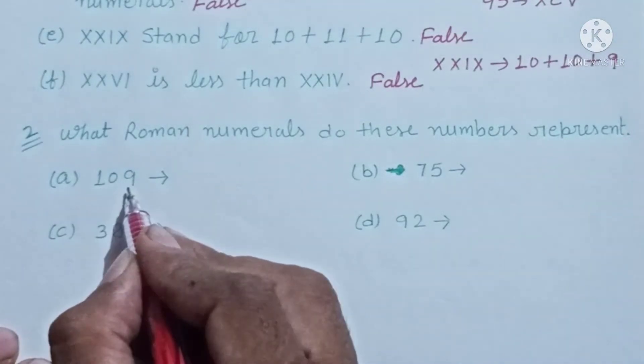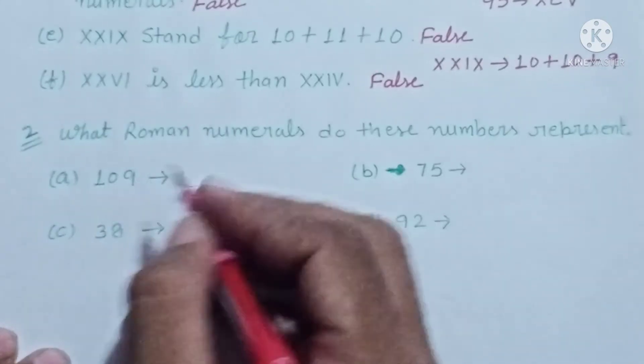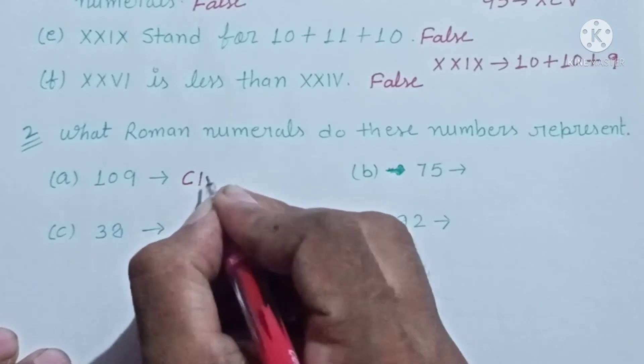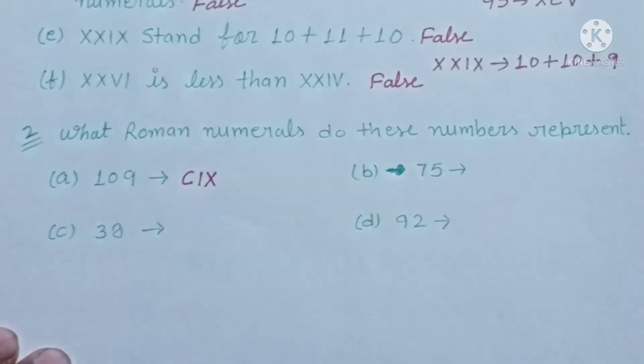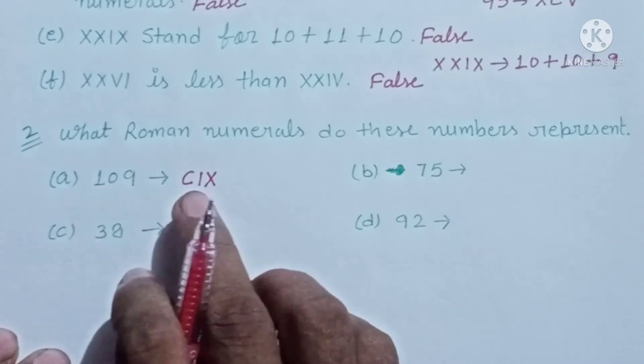First A: 109. 109 in Roman numerals we will write 100 as C, 9 as IX. Roman numerals 109 is CIX.